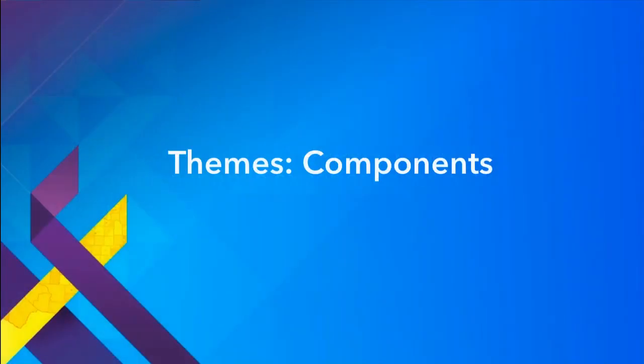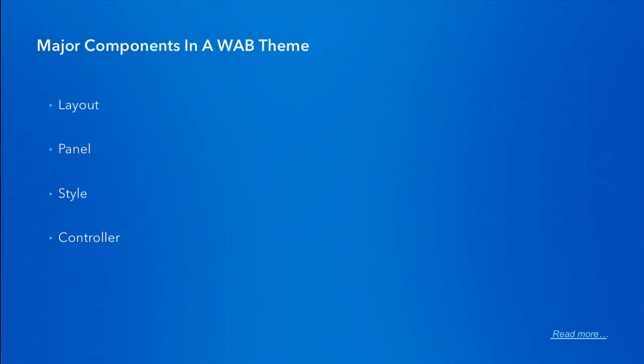Next we are going to introduce the four components in a web app builder scene. By knowing what each component is, we will have a better understanding of how web app builder defines and controls the UI behavior of an app in general, and thus understand how to add extra code and functionalities to those components to make a mobile experience happen. The four major components are: layout, panel, style, and controller.